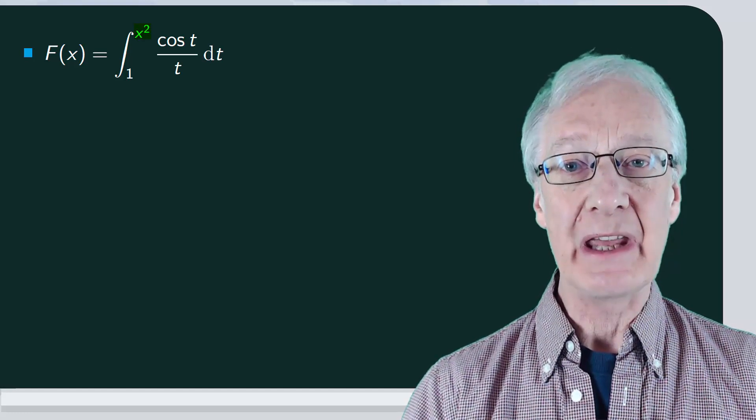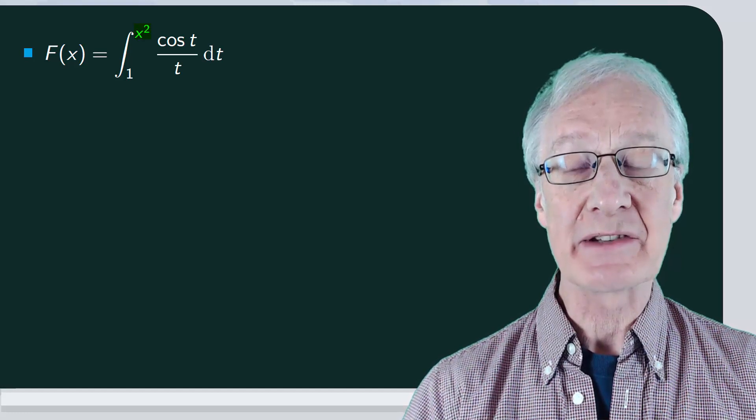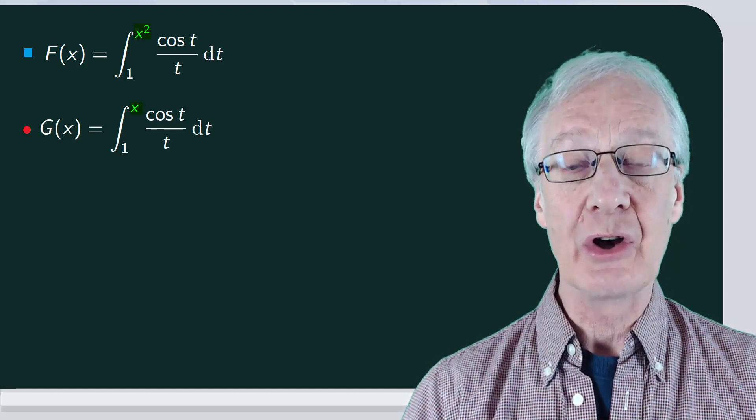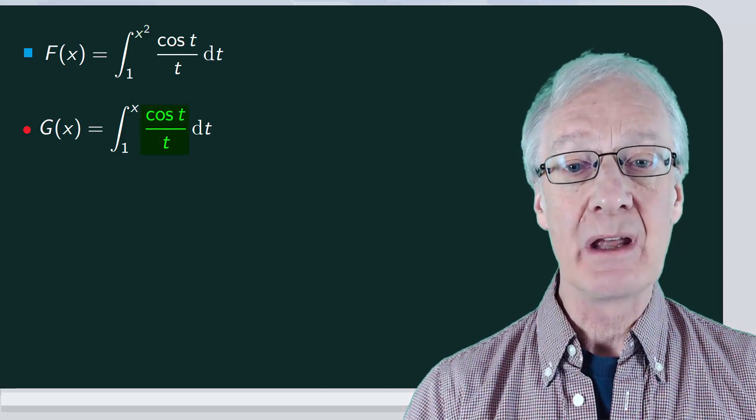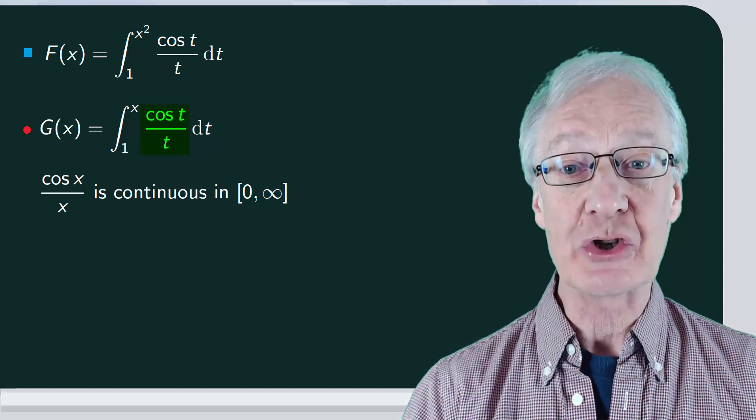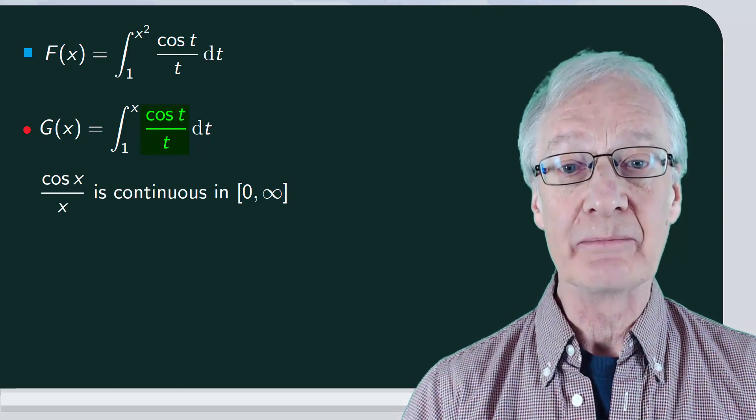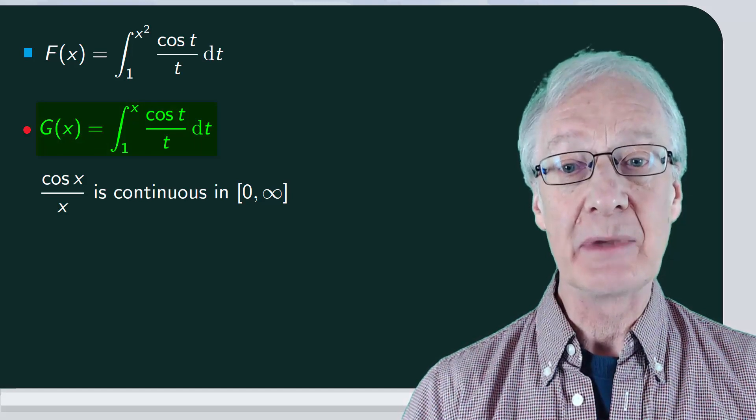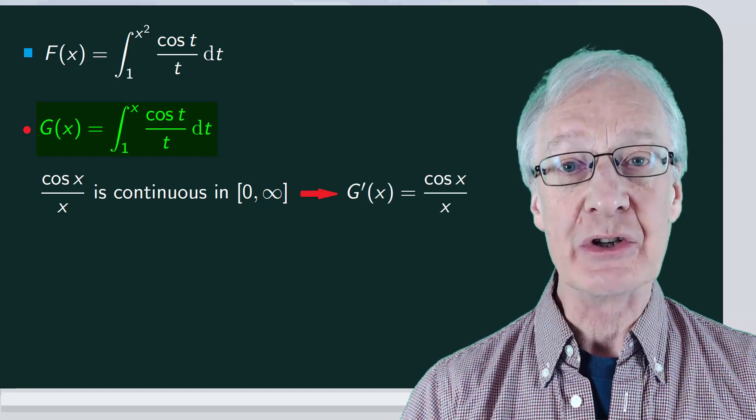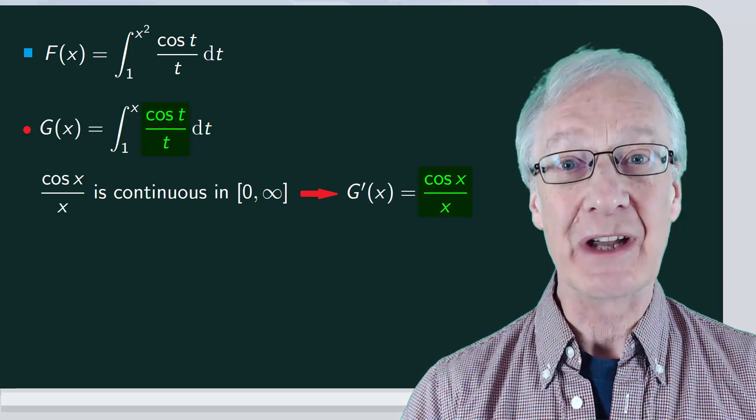Consider g of x to be the integral where we put x instead of x squared. That is, g of x is the integral between 1 and x of cos t over t dt. Note that since cos x over x is a continuous function for any x greater than or equal to 1, we can apply the fundamental theorem of integral calculus to g of x, so that g prime of x is equal to cos x over x.